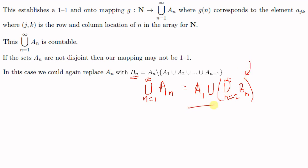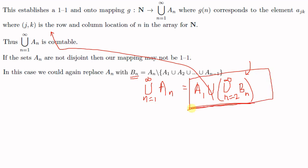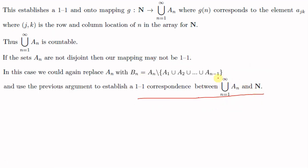Since all the Bn's are disjoint, we can use the previous argument to show there exists a one-to-one correspondence between ℕ and A1 ∪ ⋃(n=2 to ∞) Bn. Since this set equals ⋃(n=1 to ∞) An, there exists a one-to-one correspondence between ℕ and ⋃(n=1 to ∞) An. Thus ⋃(n=1 to ∞) An is countable, and this completes the proof.